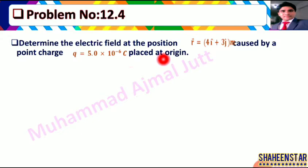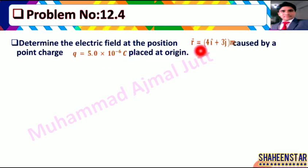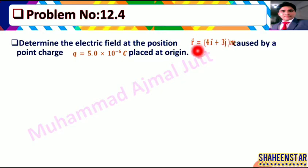Is mein hamare paas yeh data given hai ke aapke paas position vector hai aur ek charge hai. Woh charge origin pe pada hua hai aur position vector ki statement hai 4i + 3j. Yeh unki position hai — in ke darmiyan mein hum ne electric field find karni hai.